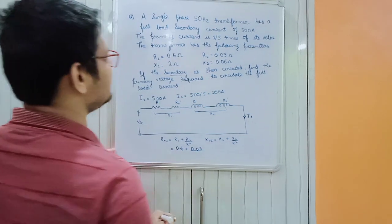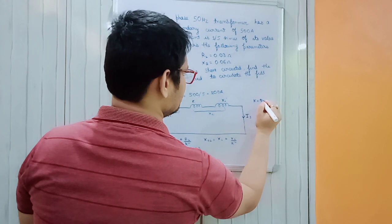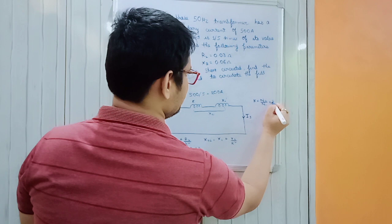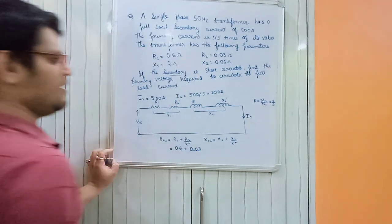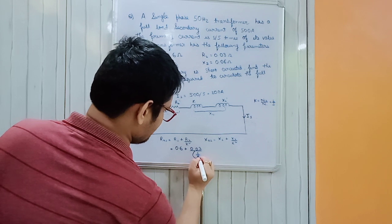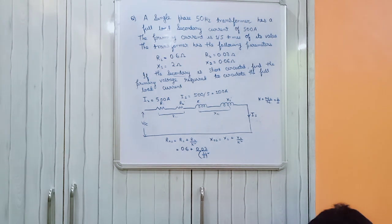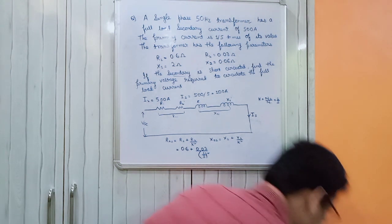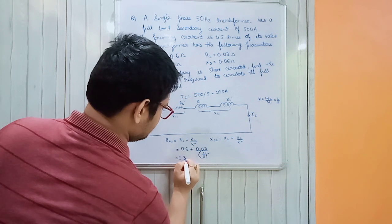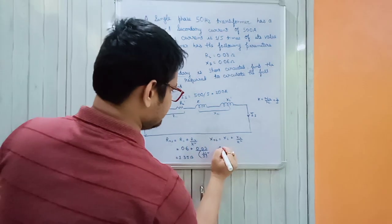Now we calculate R01. K = N2/N1 = 1.5 (already given). So R01 = R1 + R2/K² = 0.6 + 0.03/(1.5²) = 0.6 + 0.03/2.25, which gives R01 = 1.35 ohm.